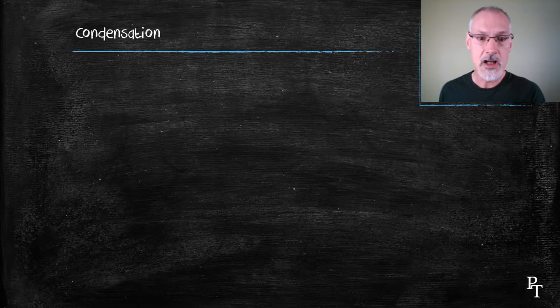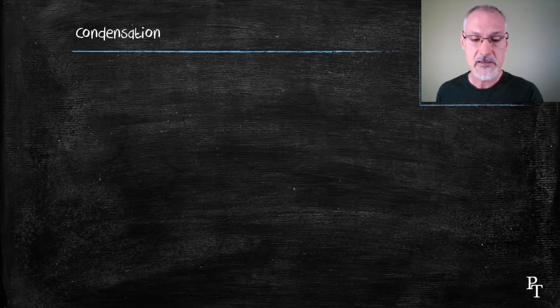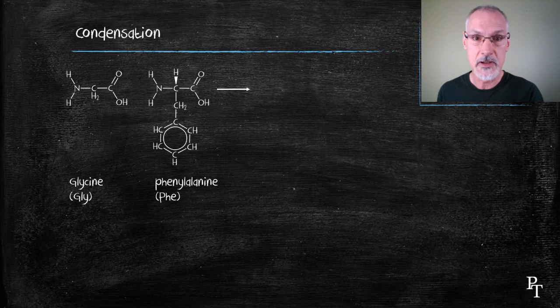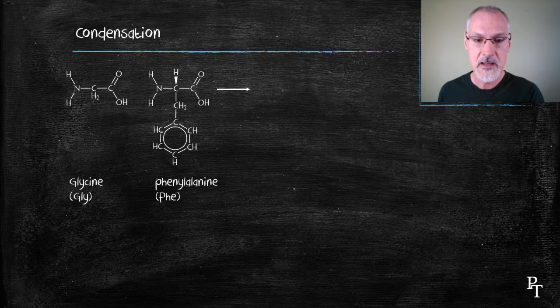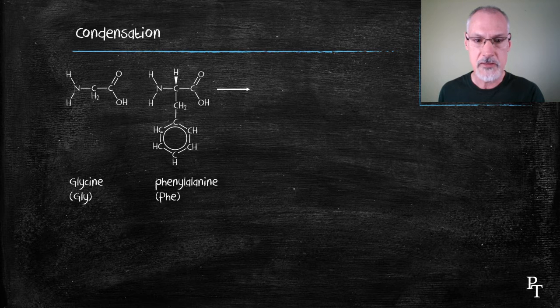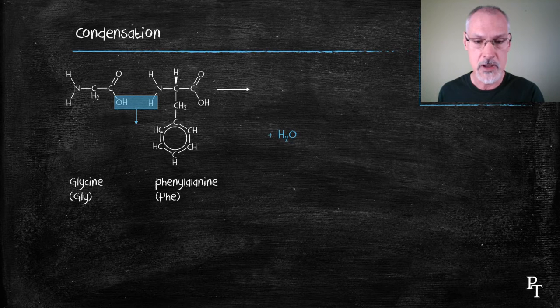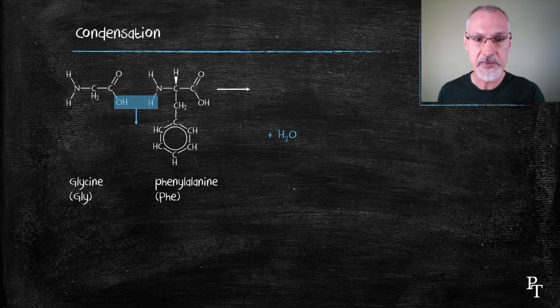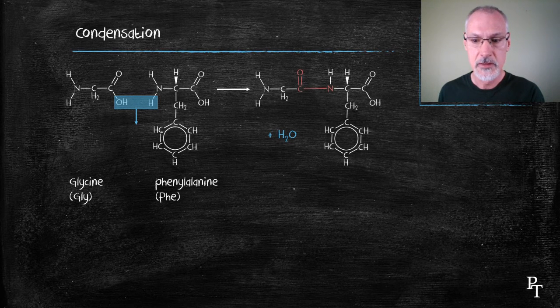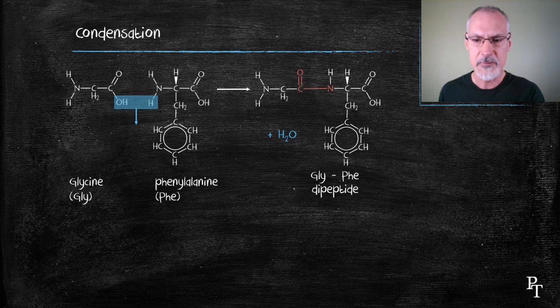Amino acids tend to undergo condensation reactions. So here I show an example of glycine combining with phenylalanine. Again, locate the location of the OH and the H group. Those two will join together to essentially produce a water molecule. And then the carbon will extend its bond over to the nitrogen, producing what we call a dipeptide.